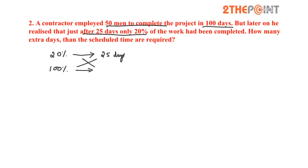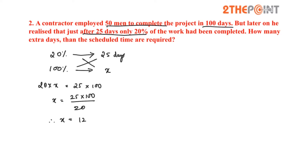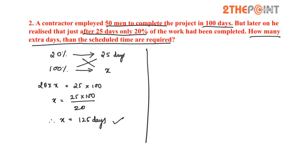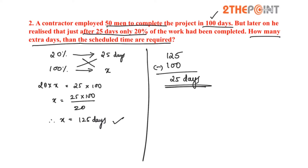Cross multiply this, taking the other side as x: 20 into x equals 25 into 100, so x equals 25 into 100 divided by 20. Therefore x equals 125 days — this is the total number of days required to complete 100 percent of the work. The scheduled time is only 100 days, but these people are taking 125 days. Subtracting gives 25 days. So 25 extra days are needed to complete the work.